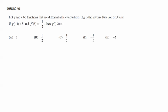In this problem, it says, let f and g be functions that are differentiable everywhere. If g is the inverse function of f, and g of negative 2 is 5, and f prime of 5 is negative 1 half, then g prime of negative 2 is what?